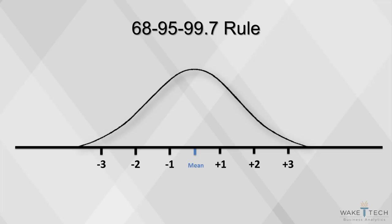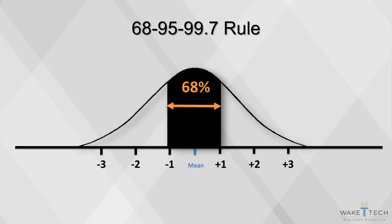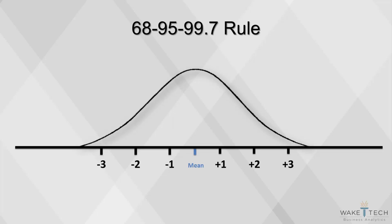The beauty of the normal curve is that no matter what its mean and standard deviation are, the area between the mean minus one standard deviation and the mean plus one standard deviation is always about 68%.